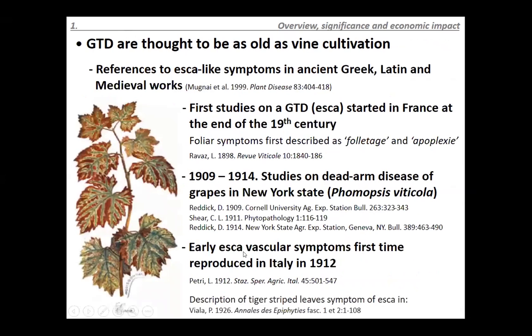It's important to know that grapevine trunk diseases are not new — they are thought to be as old as vine cultivation. There are publications referring to ESCA symptoms in Greek, Latin, and even medieval works. The first scientific confirmation of a grapevine trunk disease is from France at the end of the 19th century, describing foietage and apoplexy. Around the same time in the early 1900s, studies in New York described the dead arm disease caused by Phomopsis viticola. In 1912, Lionel Petri was first able to reproduce ESCA symptoms by inoculating healthy vines with pathogens he found.